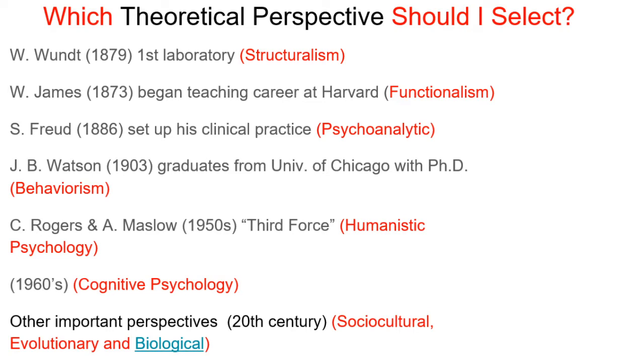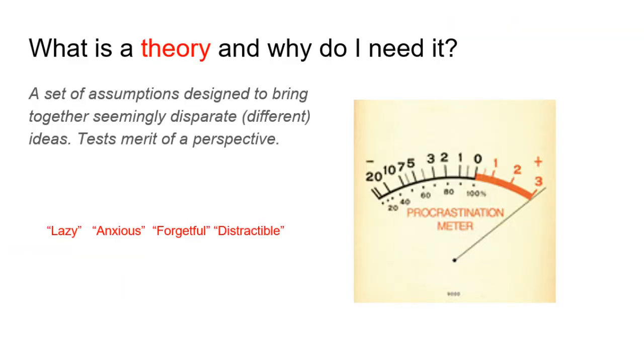We also talked about the different theoretical perspectives. These are the giant frameworks starting back in the 1870s with Wilhelm Wundt and structuralism, moving towards the current present day with evolutionary and biological methods or theoretical perspectives. Remember, theoretical perspectives rely upon testing. And what is it that we use to test the merit of a theoretical perspective? The answer is you have to put them to the test with theories. And a theory is basically two things: a set of assumptions designed to bring together seemingly disparate or different ideas, and that thing which you use to test the merit or the power of a theoretical perspective.